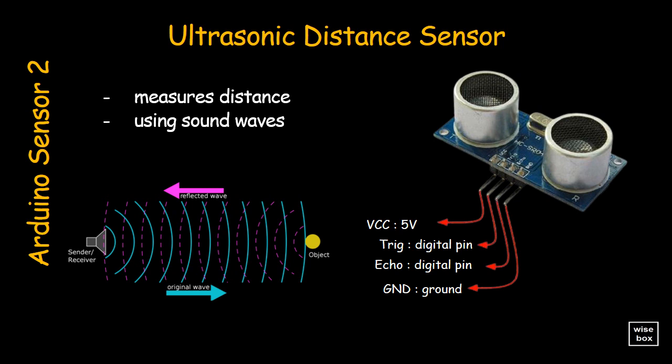The sensor measures the time of flight of the sound burst. A user then computes the distance to an object using this time of flight.